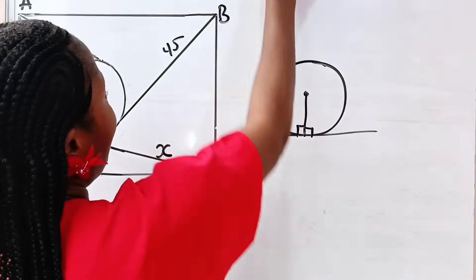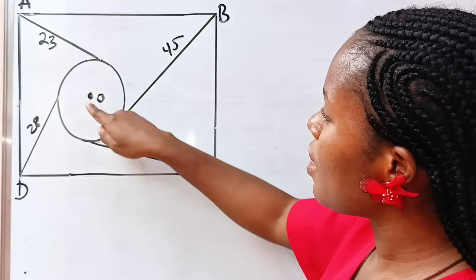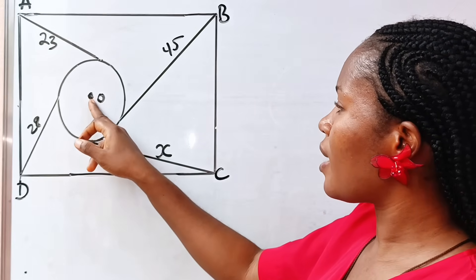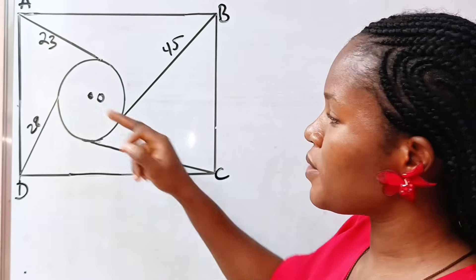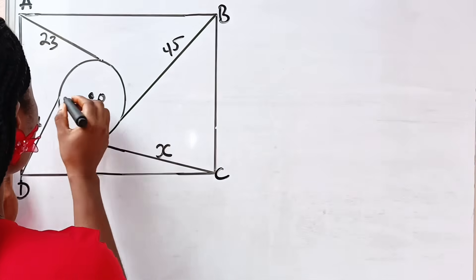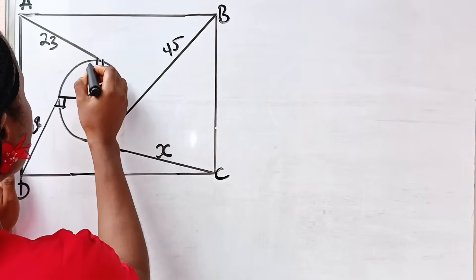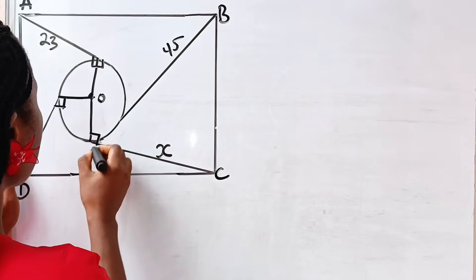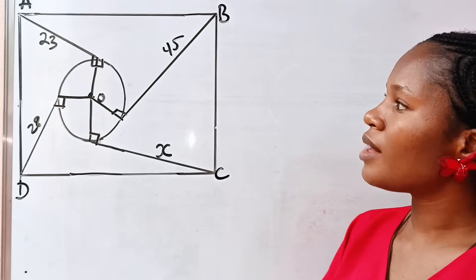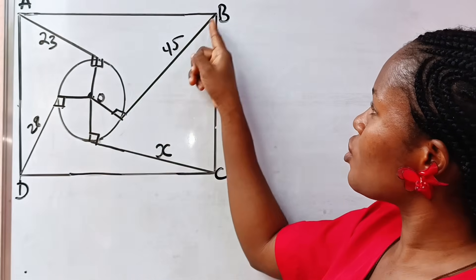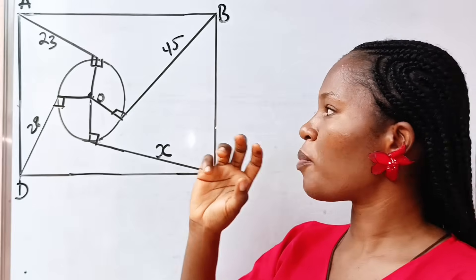We are going to apply that here and follow some processes to get the value of x. If this is the center of the circle, then drawing a straight line from center O to each tangent point forms a right angle at each point. So this place is 90 degrees, this is another 90 degrees, this is another 90 degrees, this is another 90 degrees, and this is another 90 degrees.